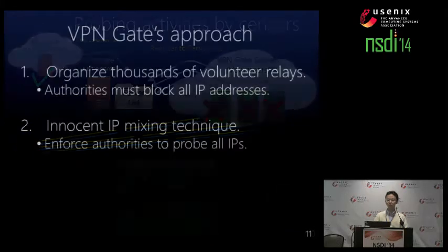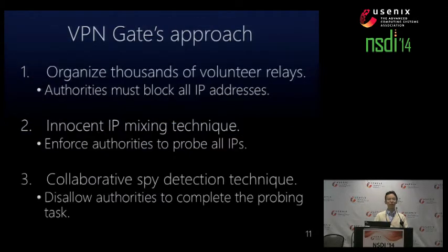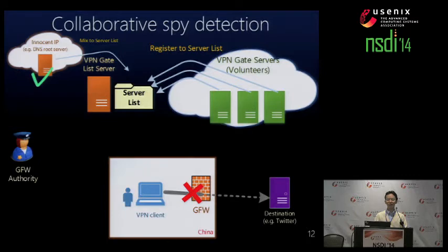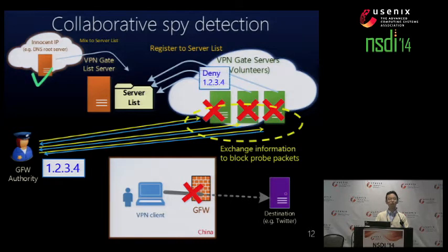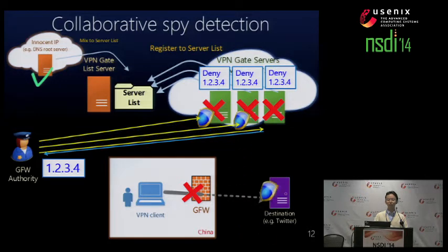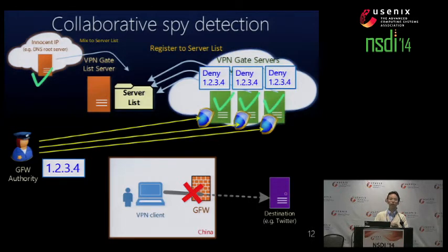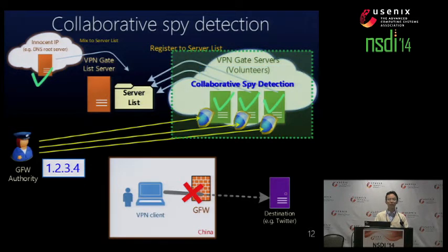That is a problem. So we need another countermeasure to their countermeasure. The third technique is collaborative spy detection, which prevents authorities from completing the probing task. The authority must use IP address blocks as source addresses to perform probing tasks. So we can exchange information about source IP addresses of authorities to block such probe packets. After we succeed in blocking such packets, the authority can no longer distinguish positive servers from negative servers, and must treat all servers as negative. That is our collaborative spy detection technique.